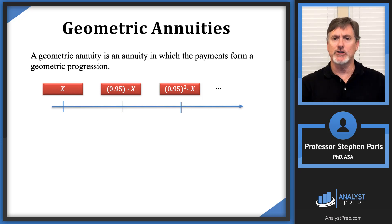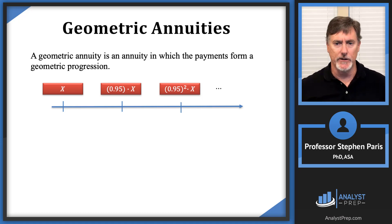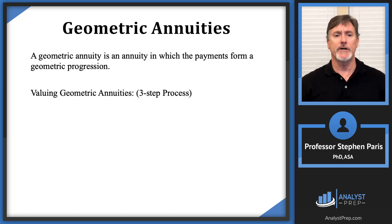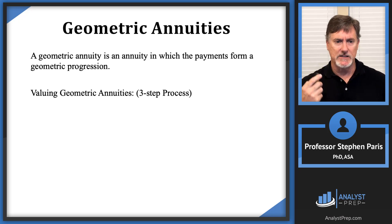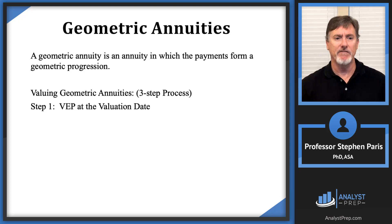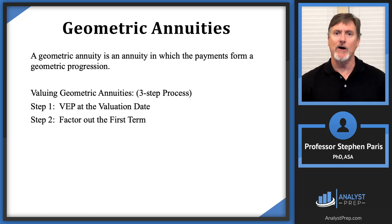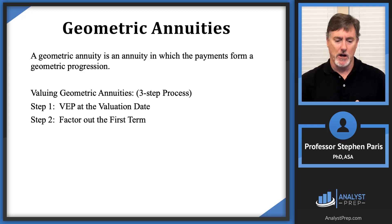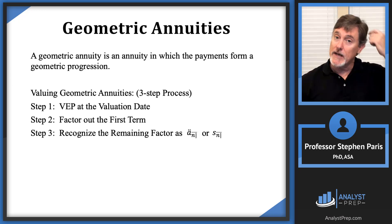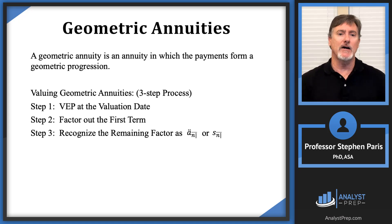Generally, you just need to recognize that your payments form a geometric progression to know you're dealing with a geometric annuity. To value a geometric annuity, I teach a three-step process. Step one: value each payment (VEP) at the valuation date — write out that sum. Step two: factor out the first term. Step three: recognize the remaining factor as either an A-double-dot angle N or an S angle N.